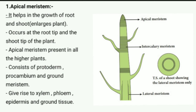Apical meristem helps in the growth of root and shoot, enlarging the plant. It occurs at the root tip and the shoot tip and is present in all higher plants — gymnosperms, angiosperms, and rhodophytes. Lower plants such as algae and bryophytes do not have it.